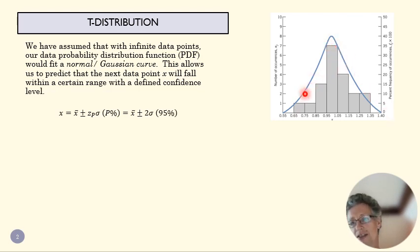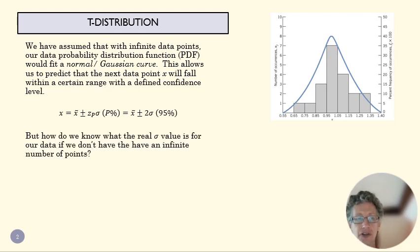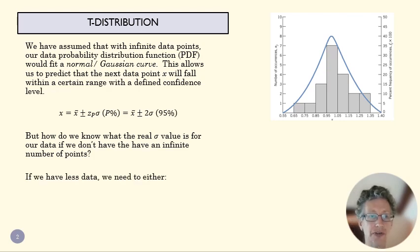We don't really know what that sigma is if we don't have a whole lot of data points. If we have less data, that's going to make a difference for our uncertainty.